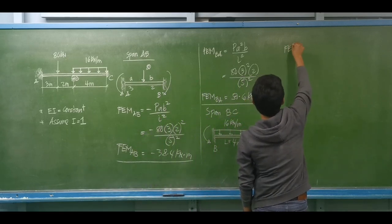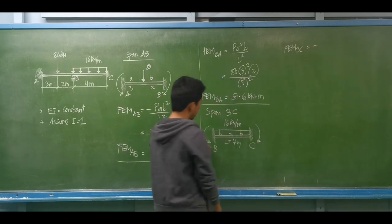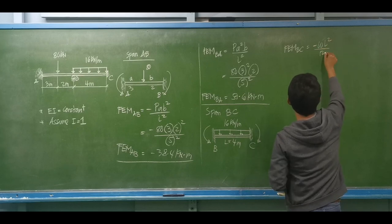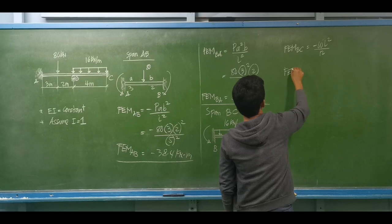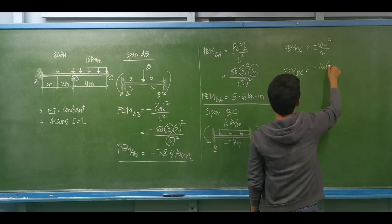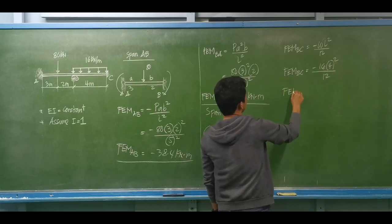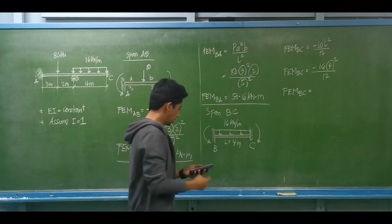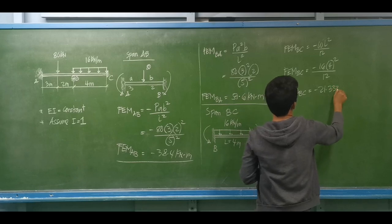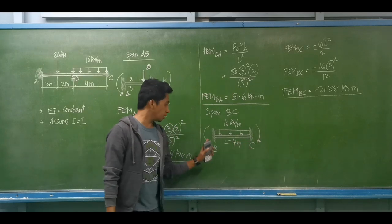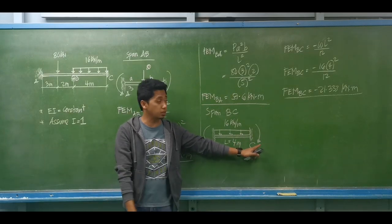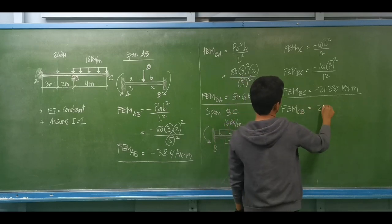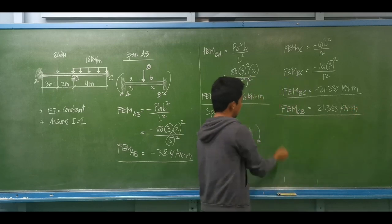For span BC with a uniform load, the fixed end moment on the left (negative) equals omega × L² divided by 12, which is negative 16 × 4² divided by 12, equal to negative 21.333 kN·m. For uniform loading, the moment at the right end is numerically equal but opposite, so the fixed end moment for CB is positive 21.333 kN·m.